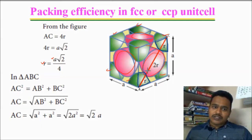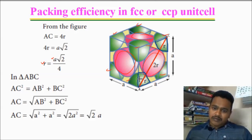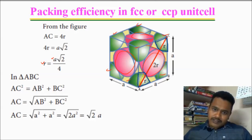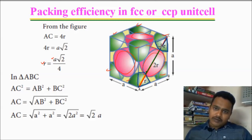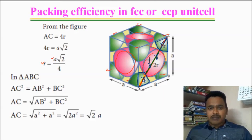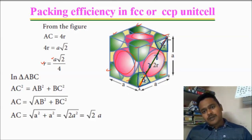The face diagonal equals the sum of the radii along it. One corner sphere contributes radius R, the central face atom contributes a full diameter (R + R = 2R), and the last corner contributes R. So the corners sphere radius is R, plus the complete diameter 2R, plus the last corner R — this completely equals the face diagonal.